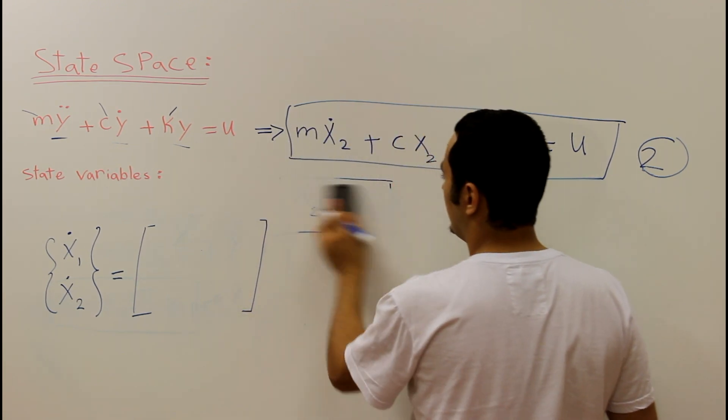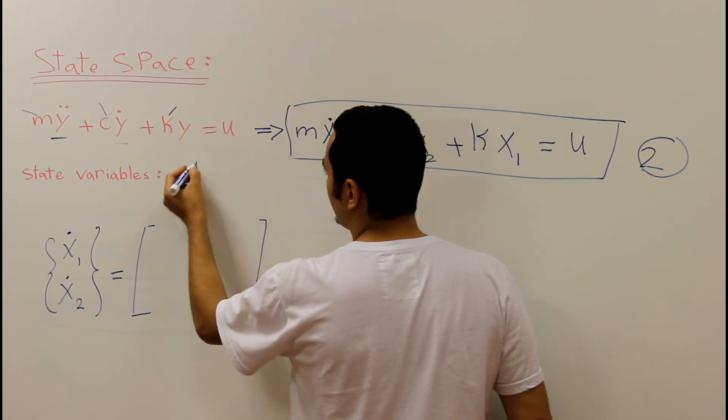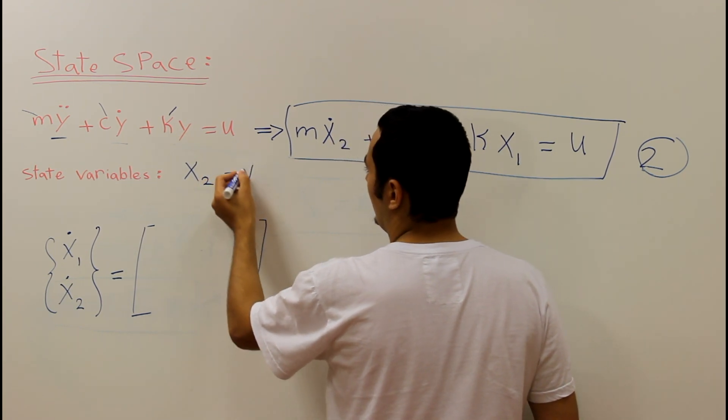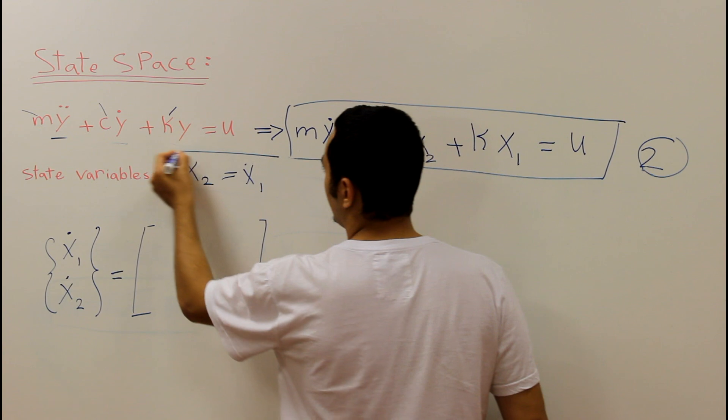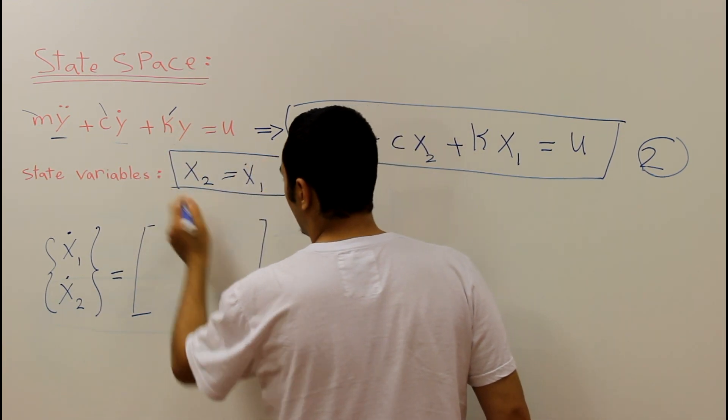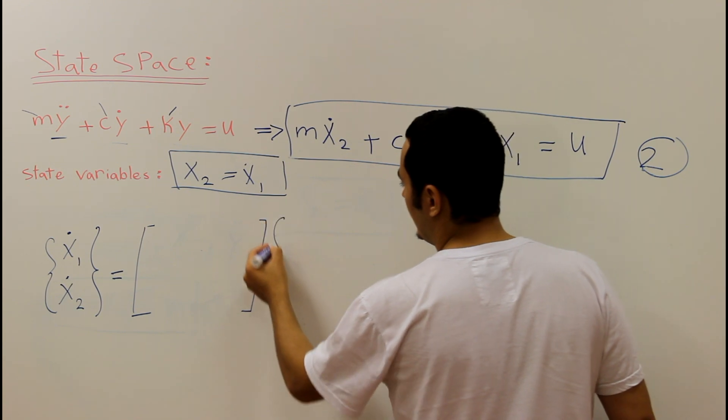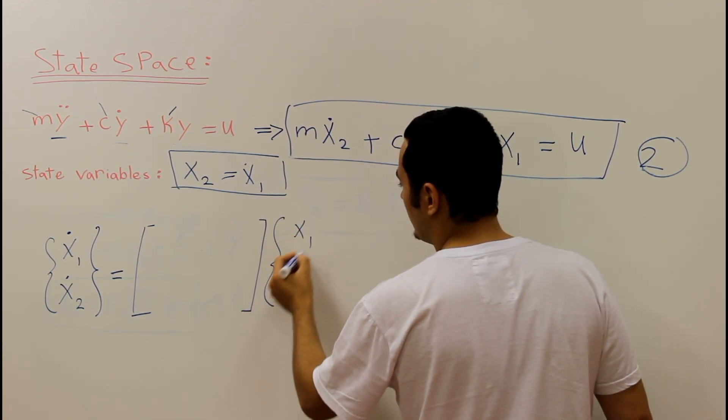I think I'm going to delete that but I'm going to write somewhere else, which is x2 equal x1 dot. So we go back to our matrices. In here we will have x1, x2